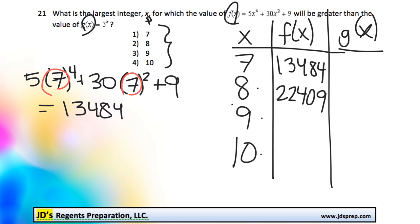When x is 9, you should get 35,244. And then when x is 10, it's 53,009.